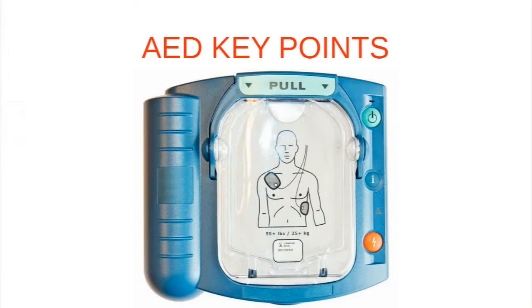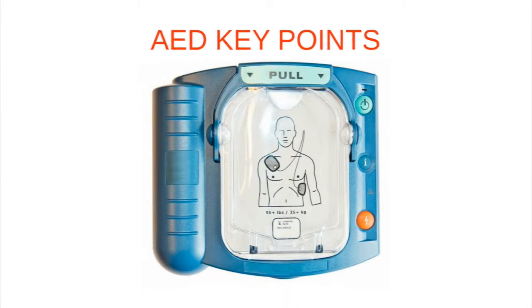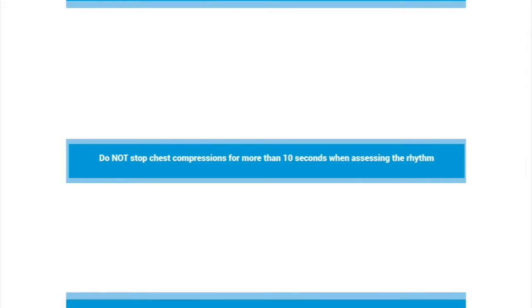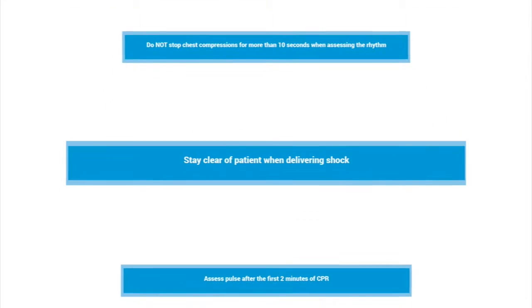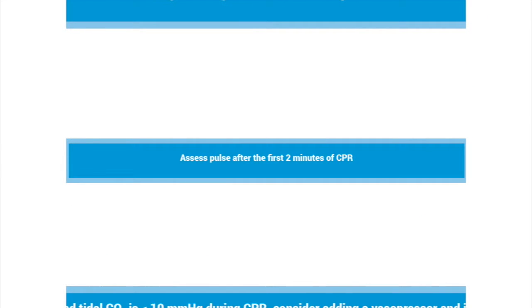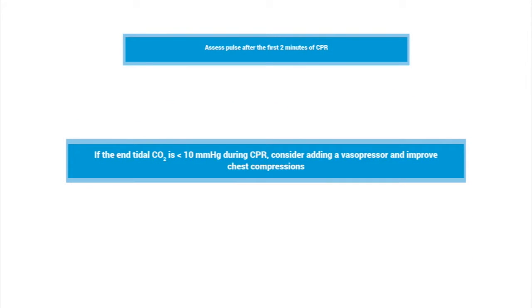First we'll discuss the key points of an AED. When delivering a shock, make sure oxygen is not flowing across the patient's chest. Do not stop chest compressions for more than 10 seconds to analyze the rhythm. Have everyone stay clear when delivering a shock. Assess the pulse after the first two minutes of CPR. If the end tidal CO2 is less than 10 millimeters of mercury during CPR, consider adding a vasopressor and improve chest compressions.